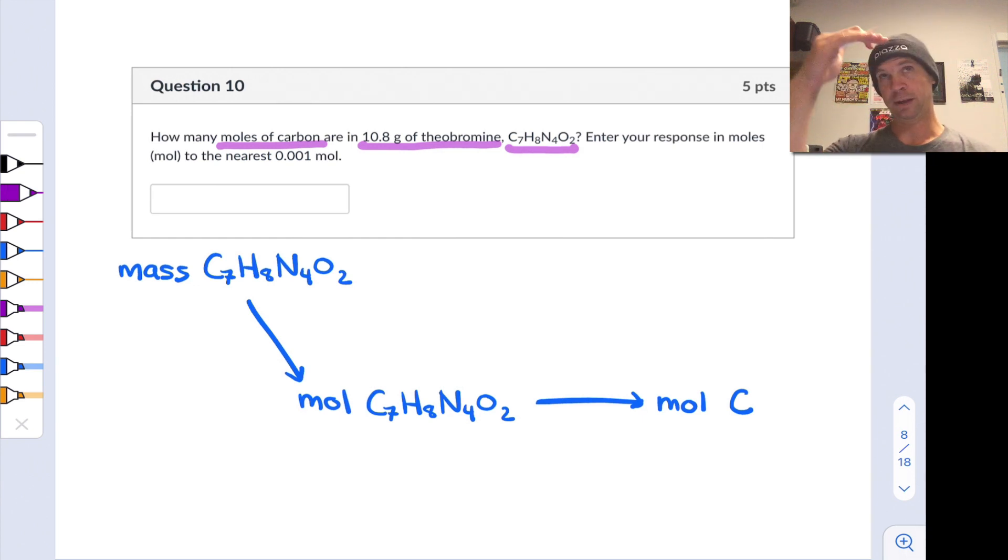Well, to go from, in each case here, how do we get from mass to moles and then moles to moles? Well, mass to moles for theobromine is going to require us to divide by the molar mass of the compound. Or another way to think about that is I'm multiplying by the mass of one mole of this material. And that's actually not given. We're gonna need to figure that out here.